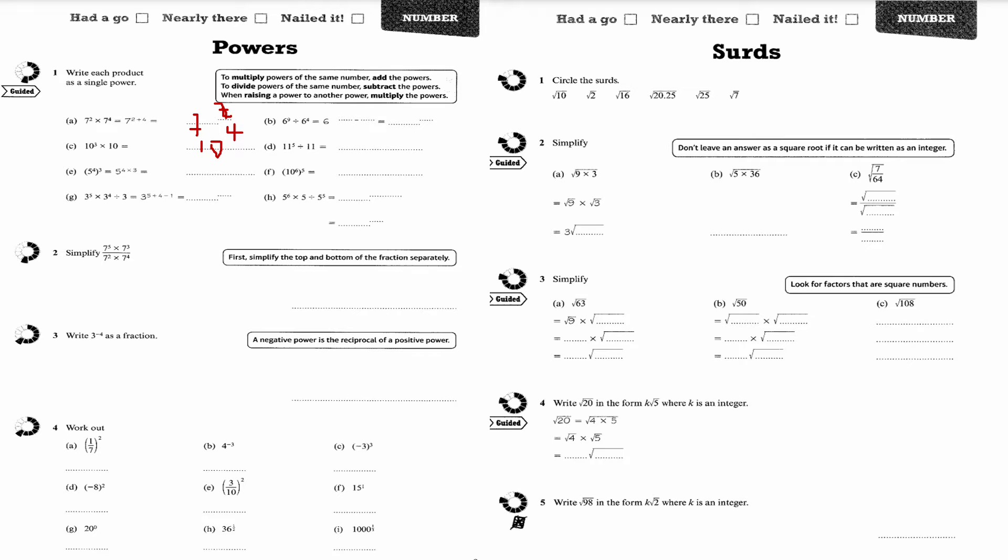Here when I've got a bracket raised to the power I multiply the powers. 5 to the 4 times 3 is 5 to the 12.